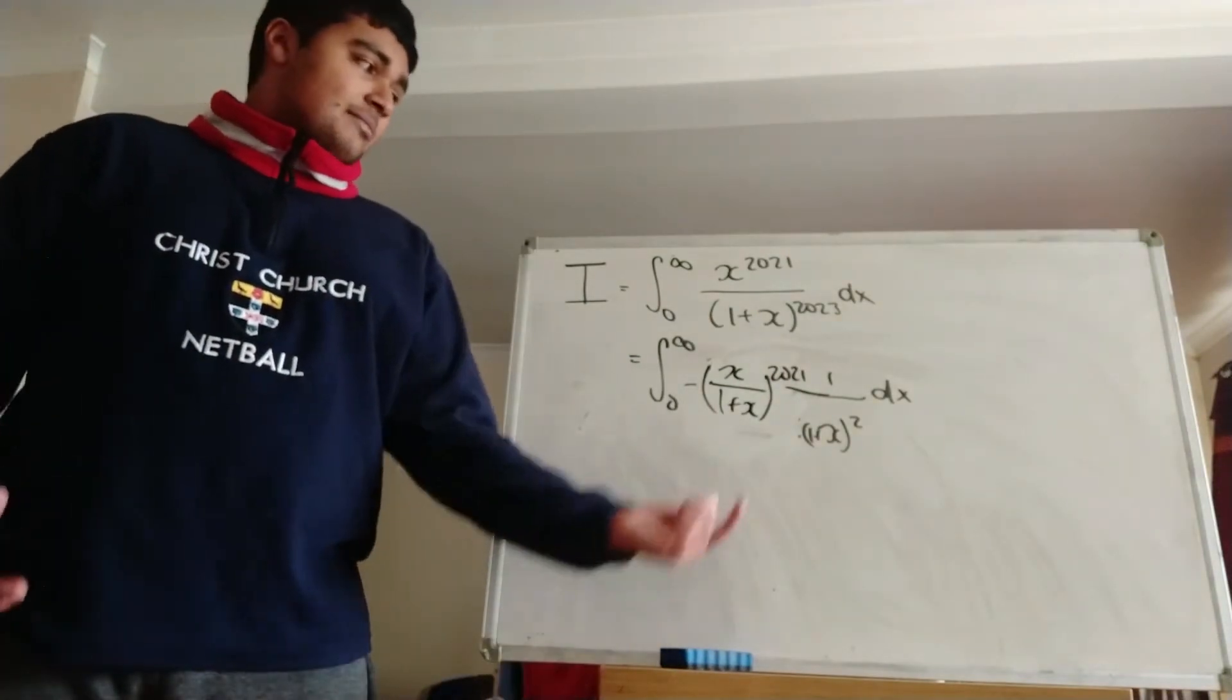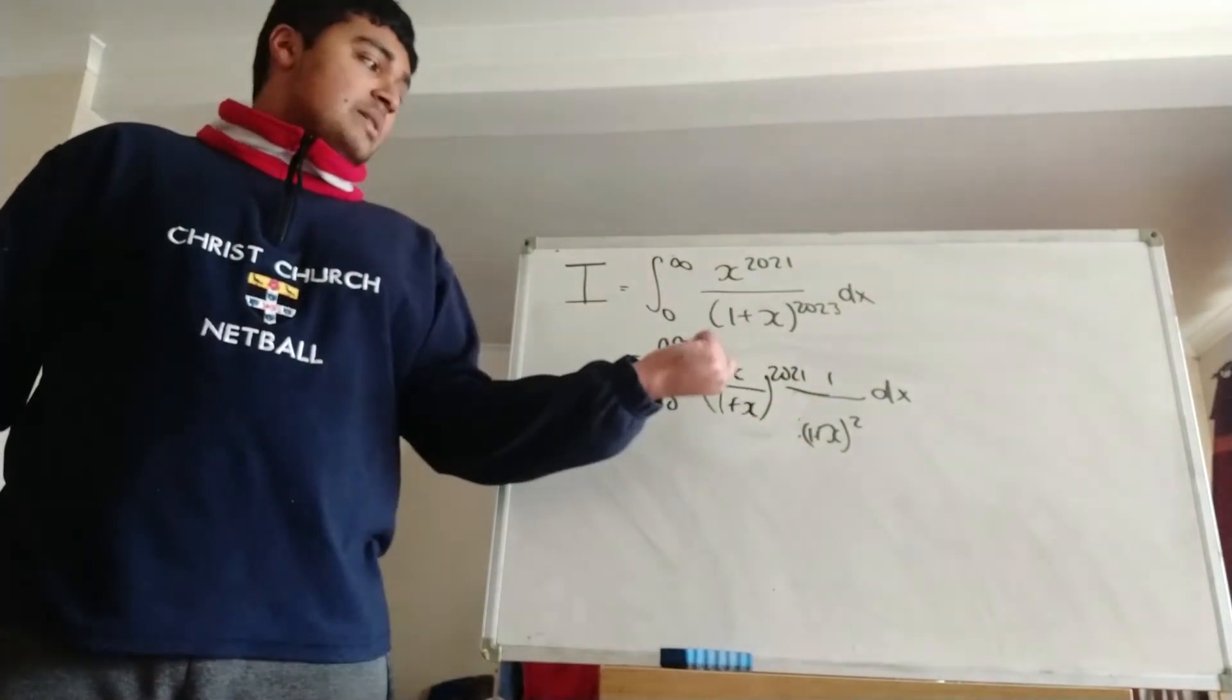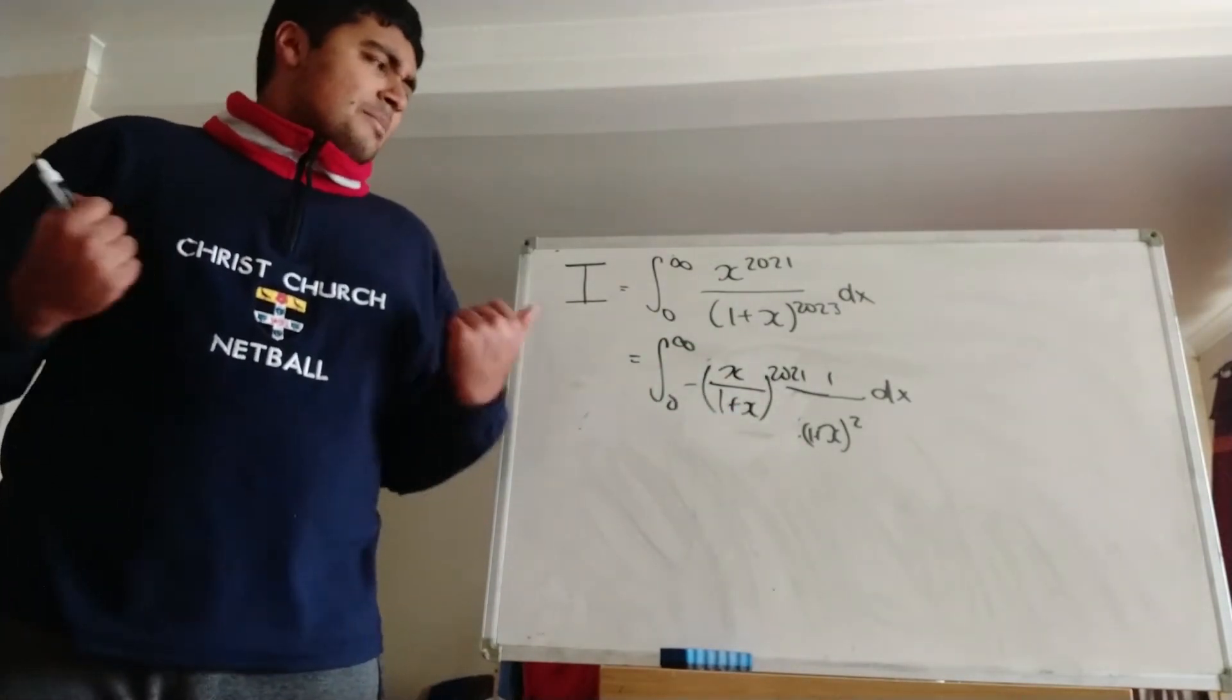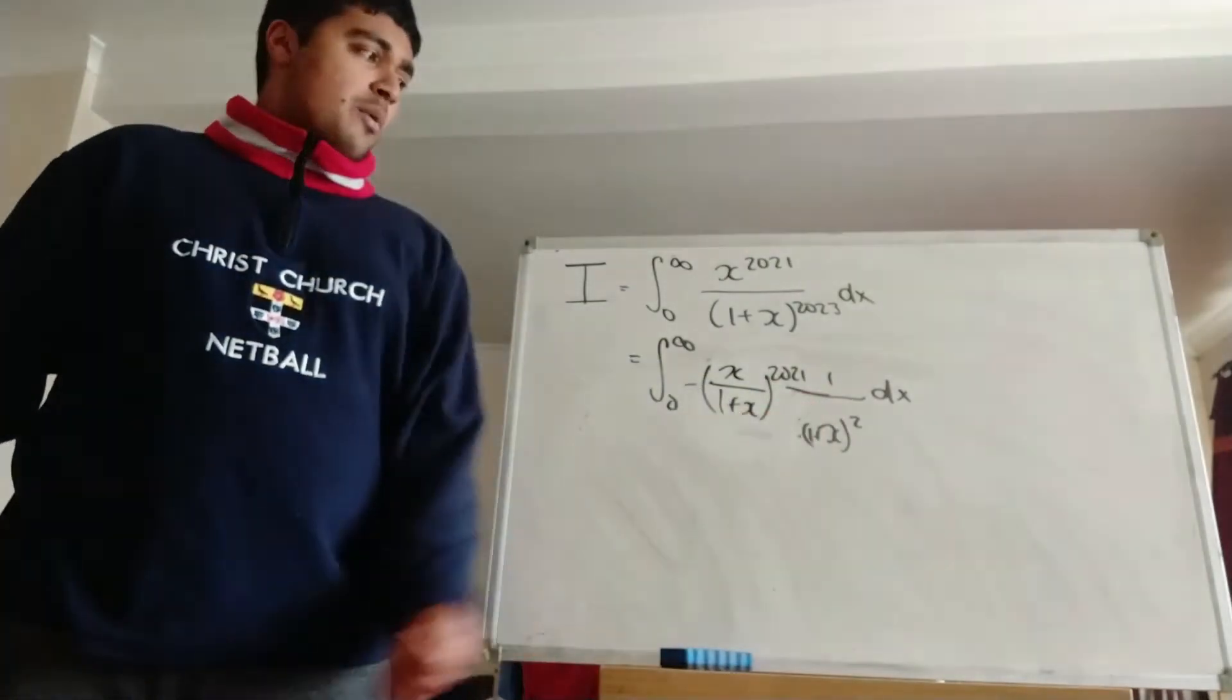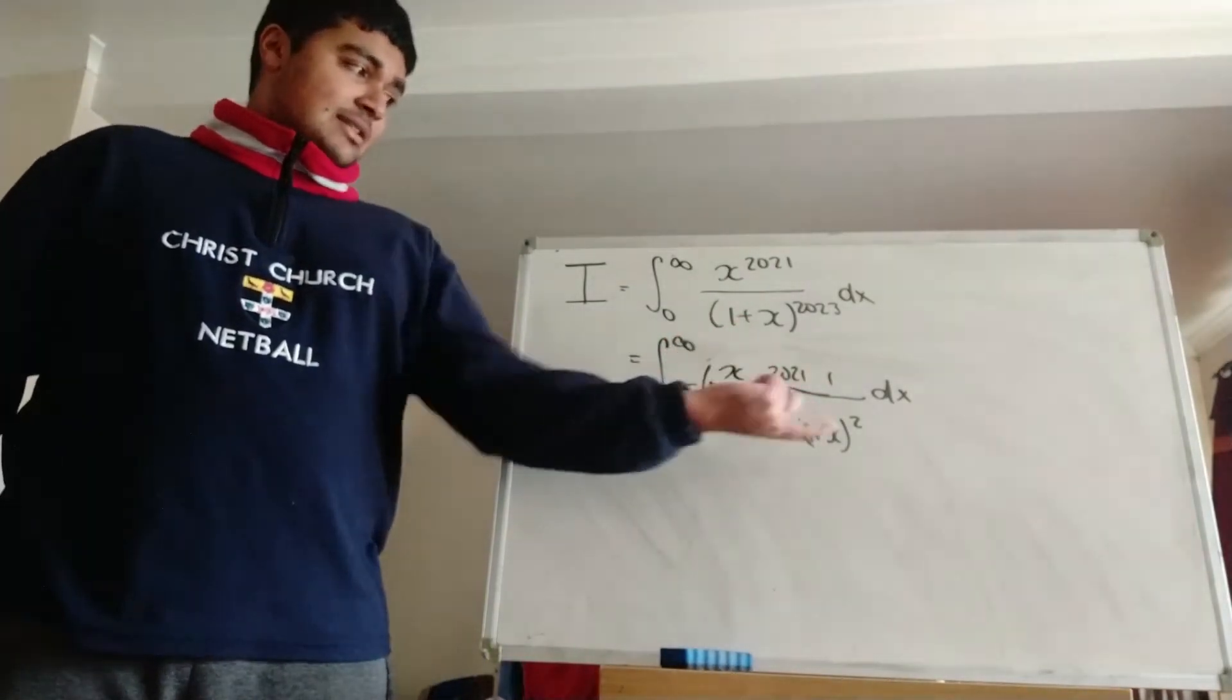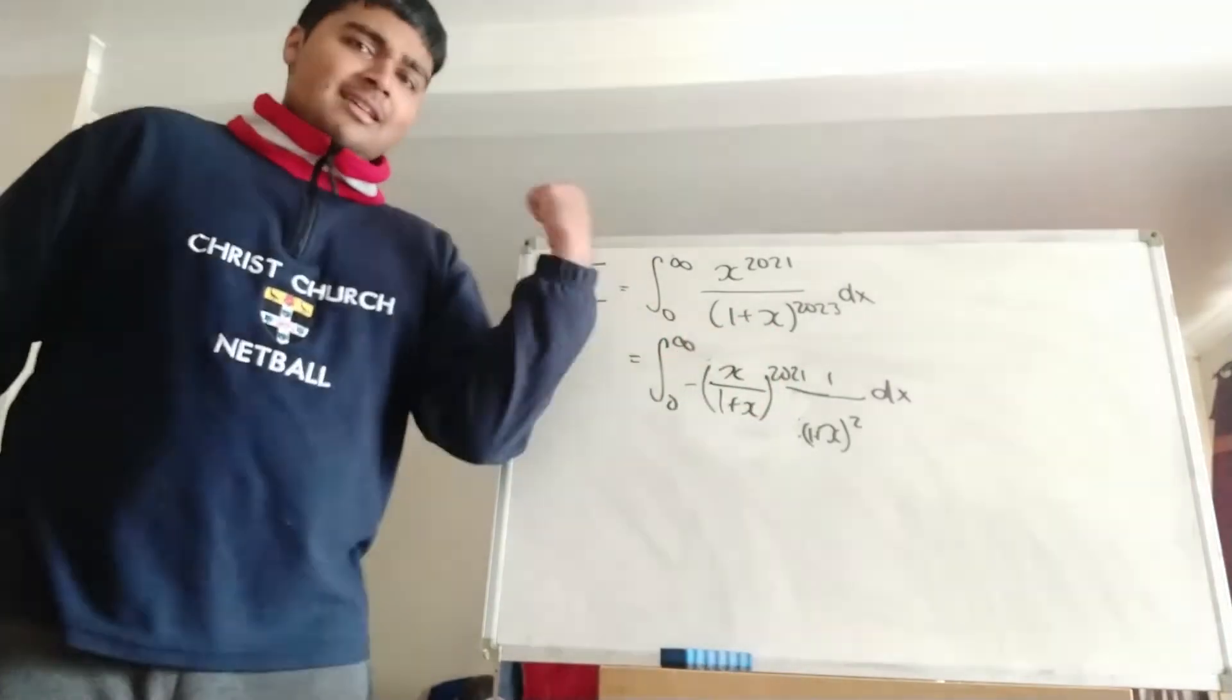And now it's very tempting to just do u equals x over 1 plus x. So then this guy here just collapses to u to the 2021. But then of course we've got to take care of this 1 over 1 plus x squared dx. But thankfully that's already taken into account, that's sort of dealt with by this guy here. Let's see what I mean.